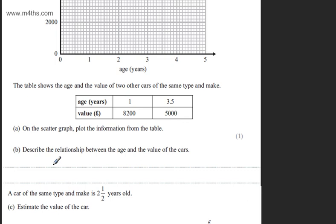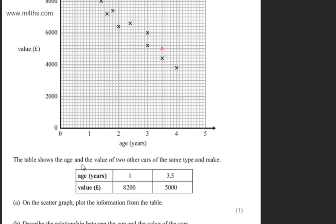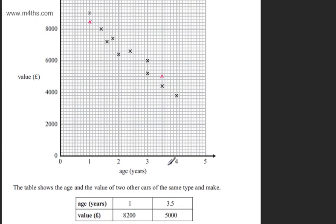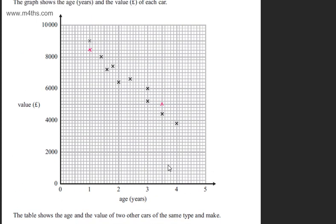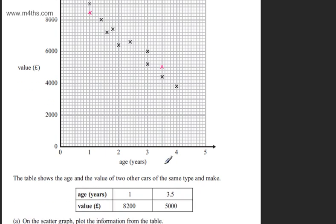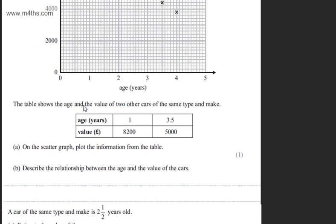In part B, we're asked to describe the relationship between the age and value of the cars. As the age increases, the value decreases. It's not asking for the type of correlation, just the relationship. So as the age of the car increases, the value decreases.